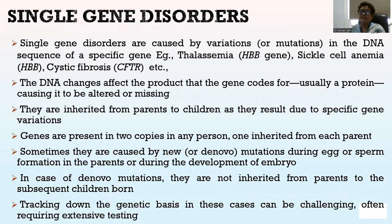Single gene disorders are caused by variations or mutations in the DNA sequence of a specific gene — for example, in thalassemia the HBB gene, sickle cell anemia HBB, cystic fibrosis CFTR, etc. The DNA changes affect the product that the gene codes for, usually a protein, causing it to be altered or missing. They are inherited from parents to children as they result from specific gene variations. Genes are present in two copies in any person, one inherited from each parent. Sometimes they are caused by new, de novo mutations during egg or sperm formation in the parents or during the development of the embryo. In the case of de novo mutations, they are not inherited from parents to subsequent children born. Tracking down the genetic bases in these cases can be challenging, often requiring extensive testing.